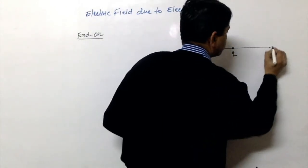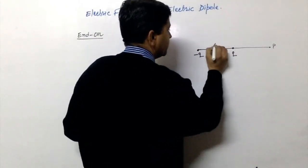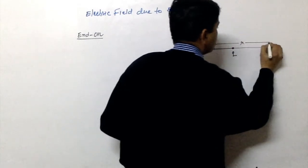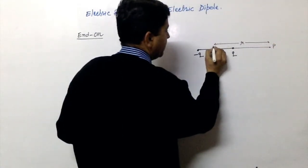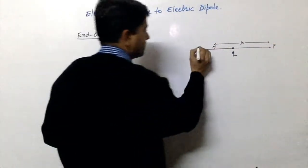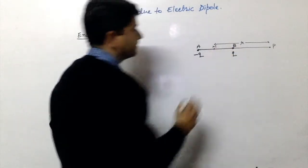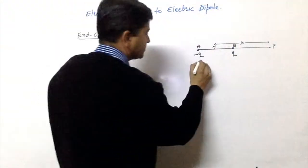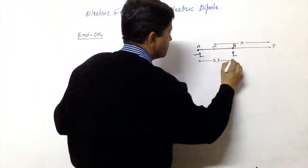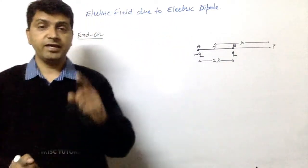Let's take a point P which is at a distance R from the center M of the dipole. In this case the length of the dipole is 2a.